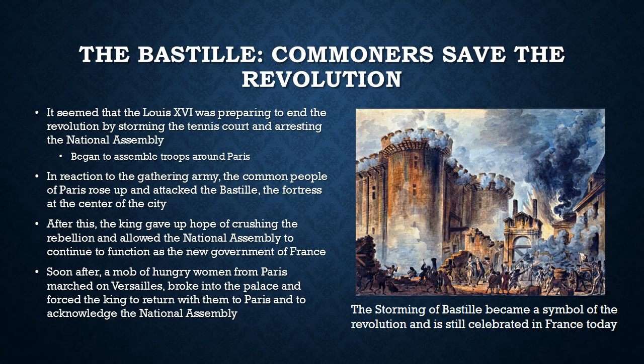The king was not happy with this idea. It seemed that Louis XVI was preparing to end the French Revolution at the very beginning by storming the tennis court and arresting the National Assembly, and he began to assemble troops around Paris. In reaction to this gathering army, the common people of Paris grew nervous and attacked the Bastille — a huge fortress in the middle of the city that contained weapons of the army and had served as a prison. The mob successfully took the castle, and after the storming of the Bastille the king gave up hope of crushing the rebellion, backing down and allowing the National Assembly to continue to function.